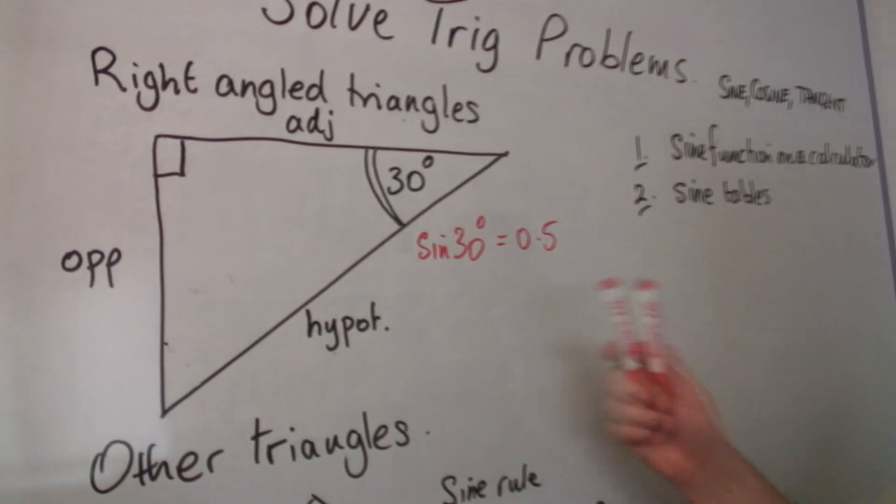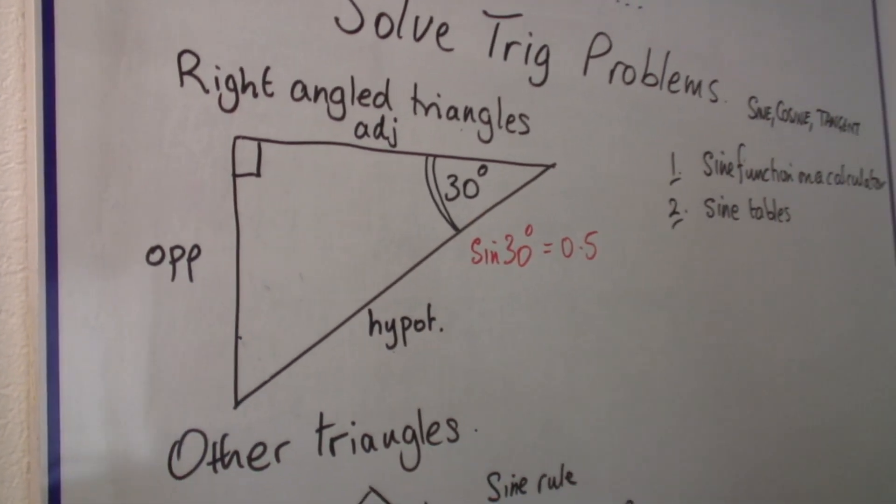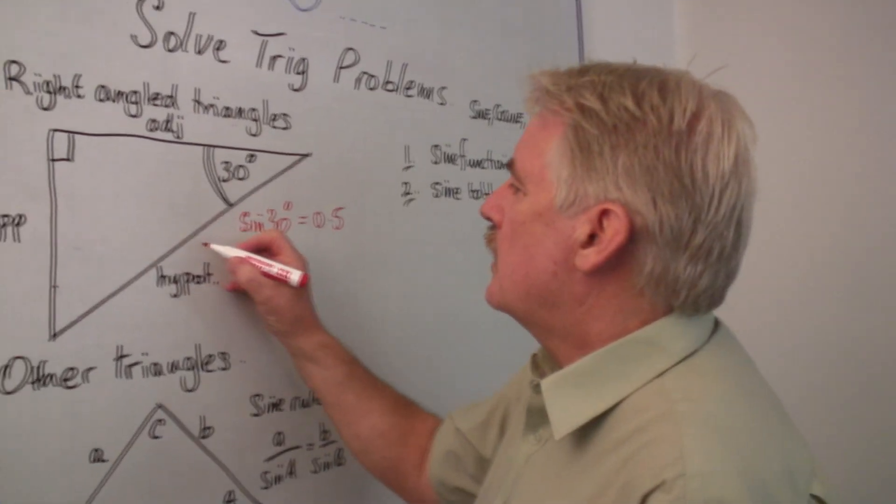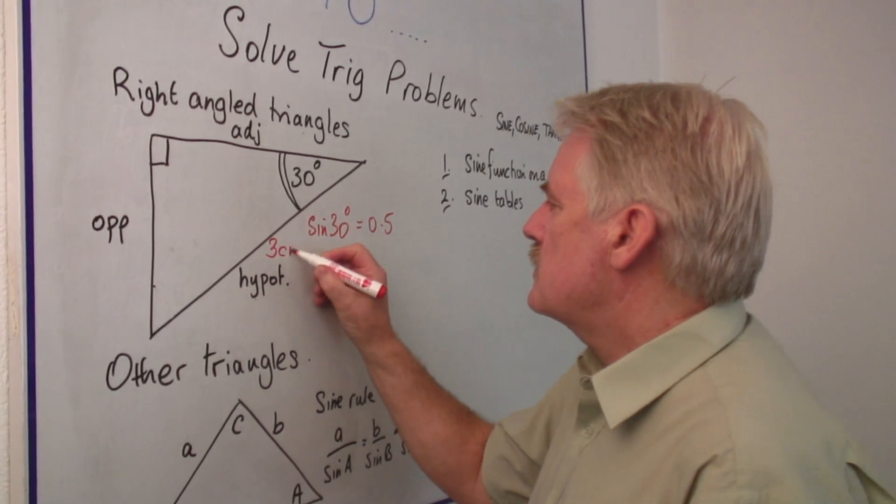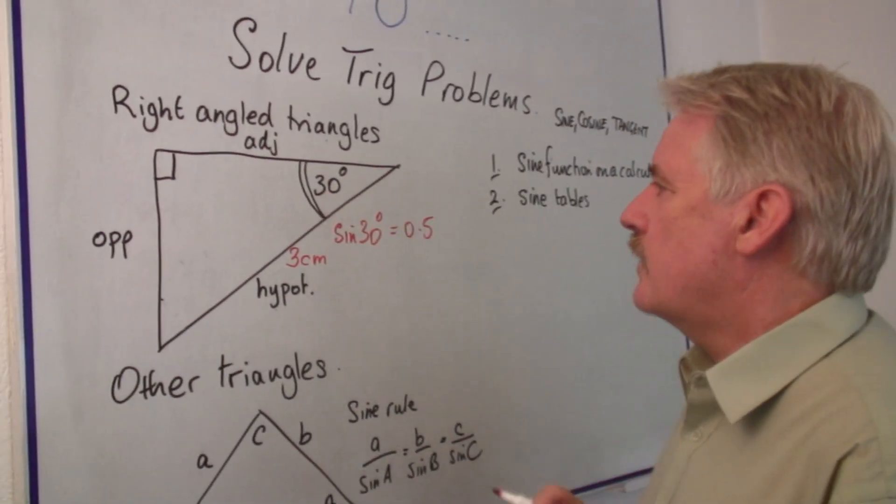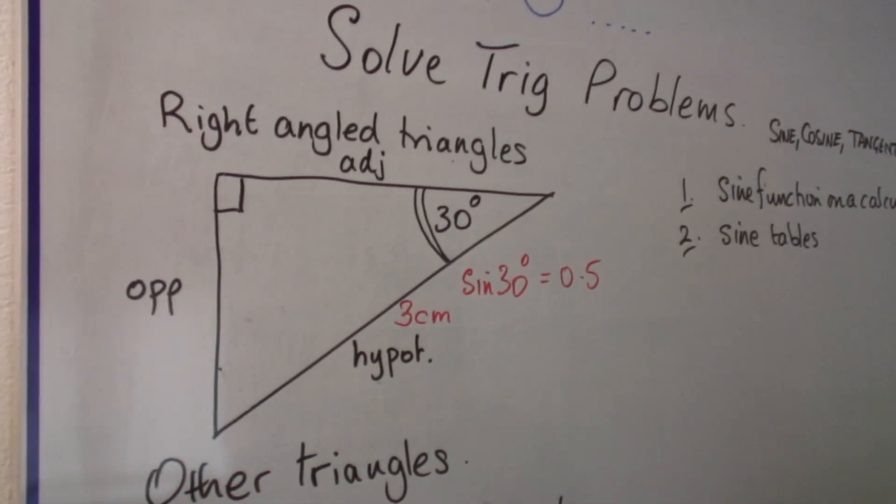So if we actually want to solve the problem, if we know the length of the hypotenuse, for example, let's say this hypotenuse is 3 centimeters. We don't know the length of this side, we don't know the length of that side. But we don't have to because in the right-angle triangle, they are fixed.